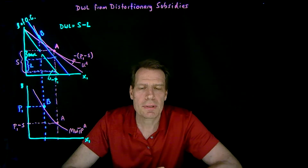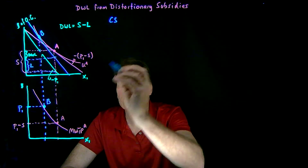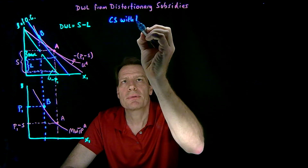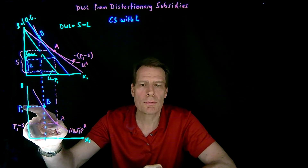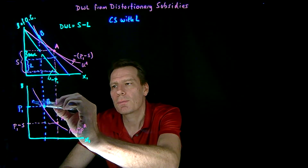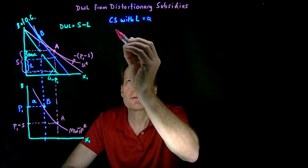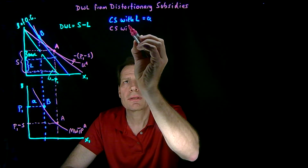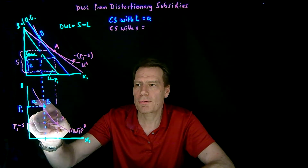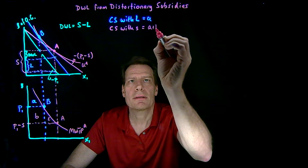Now we can do exactly the same thing as we did with taxes. We figure out consumer surplus without the distortionary subsidy but with the lump sum subsidy, leaving the consumer at the high price. In this case, consumer surplus is everything above that price up to the marginal willingness to pay curve, which is area A. Then we figure out consumer surplus with the distortionary subsidy — everything above the lower price up to the marginal willingness to pay curve — which is area A plus B plus C.